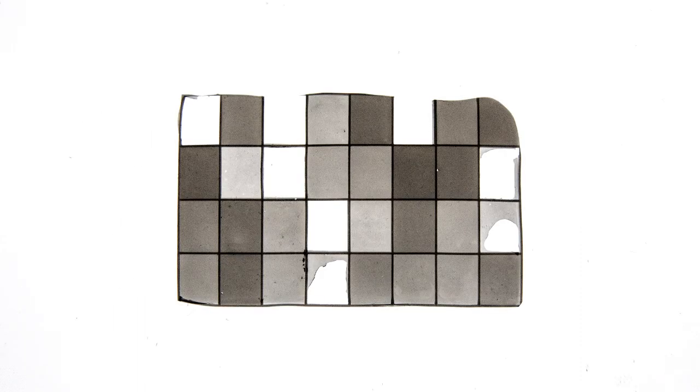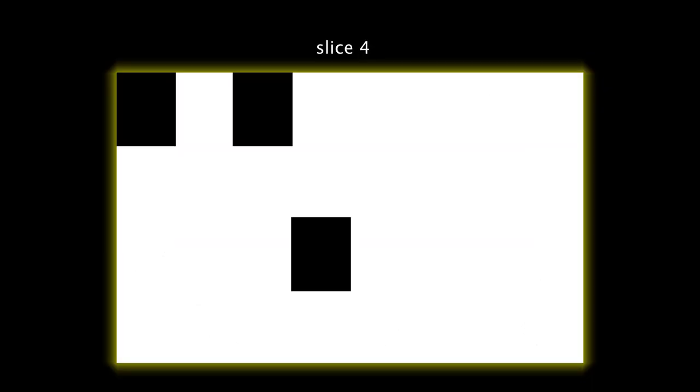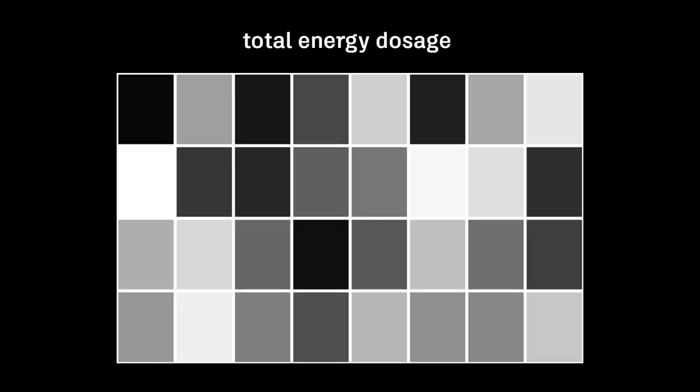But if we're clever, we can get the same information from a single print. We start with a diagnostic print file consisting of 32 slices. The slice images create a panel of 32 rectangles where each rectangle receives a distinct amount of light energy.